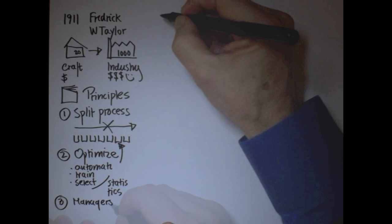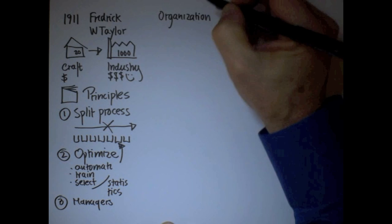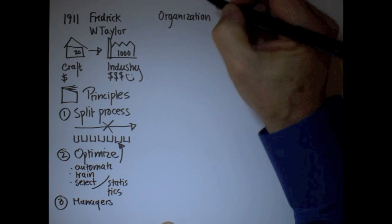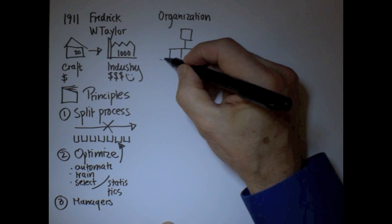He also introduced managers, and a new type of organization emerged. That was the functional hierarchy. The functional hierarchy with the boss at the top, with department heads, and each has his group leaders, and they have their workers.